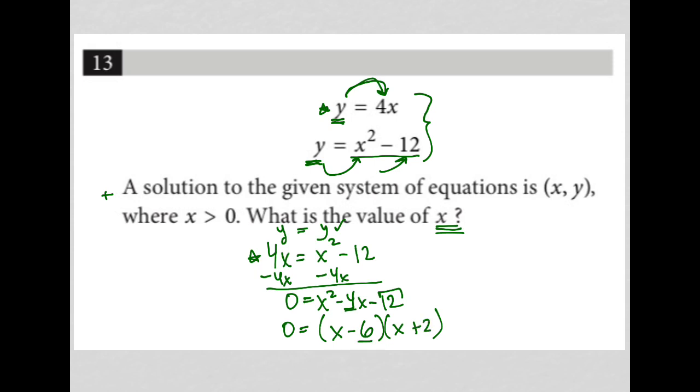So negative 6 times positive 2 is negative 12, and negative 6 plus 2 is negative 4. So that's how we factor a trinomial, especially a trinomial that does not have a coefficient in front of the x squared term.